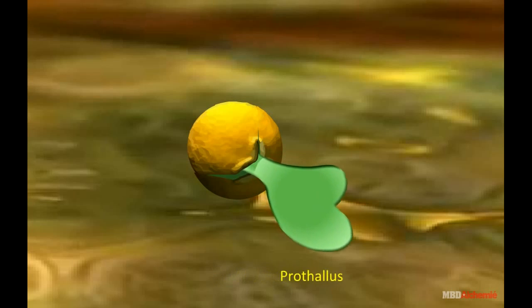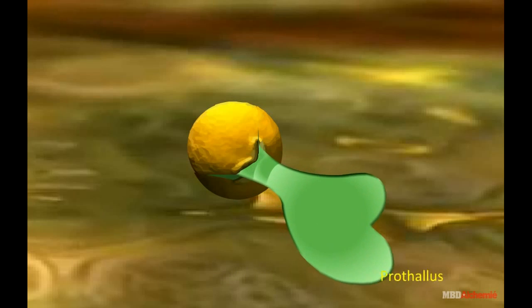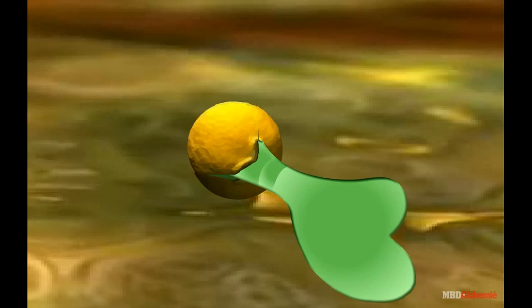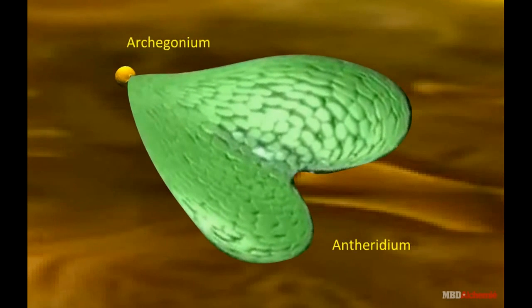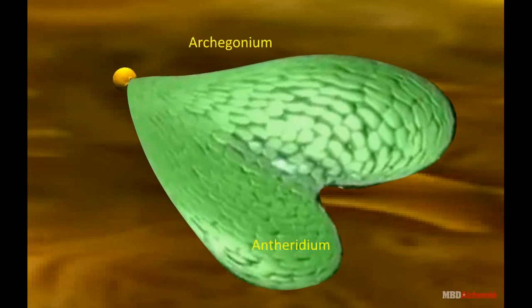The prothallus lies flat on the ground and bears many unicellular rhizoids. On the undersurface, antheridia and archegonia are borne.